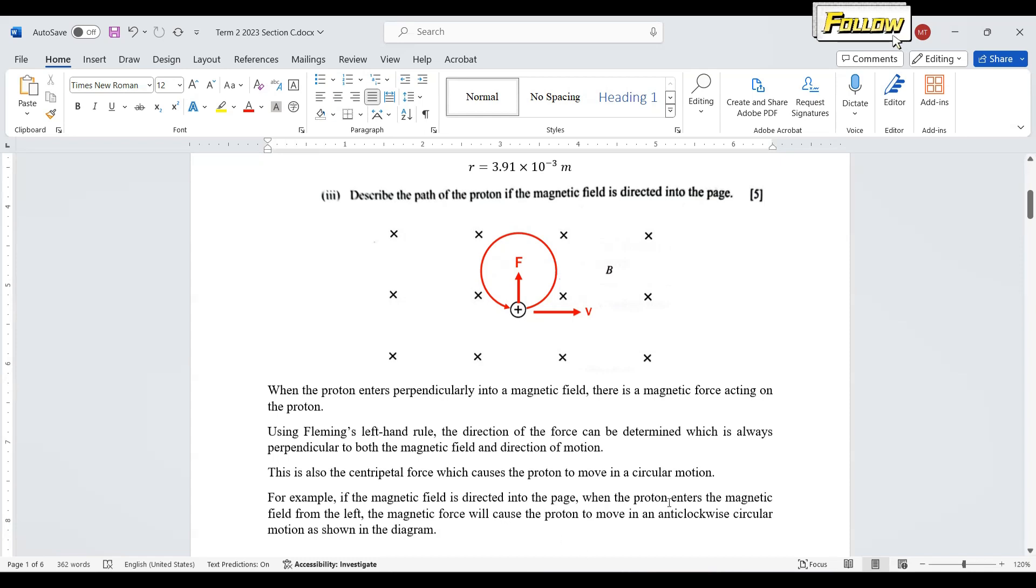When the proton enters the magnetic field from the left, the magnetic force will cause the proton to move in an anti-clockwise circular motion as shown in the diagram. This is the expected observation.